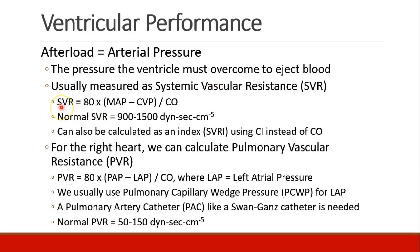There's an equation to measure SVR: it's 80 times the difference between the mean arterial pressure and the CVP, divided by the cardiac output. A normal SVR has an unusual unit — dynes seconds per centimeter to the fifth — and normal SVR is in the range of 900 to 1500. Just like cardiac output can be indexed to a patient's body surface area, we can index SVR as well, creating the SVRI (SVR index), using cardiac index instead of cardiac output.